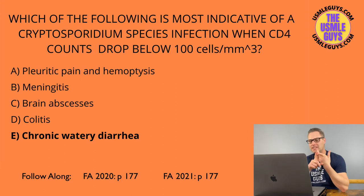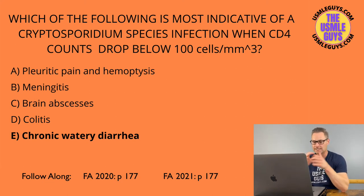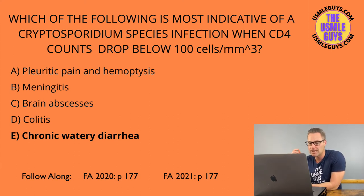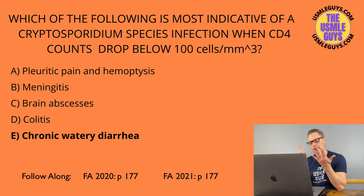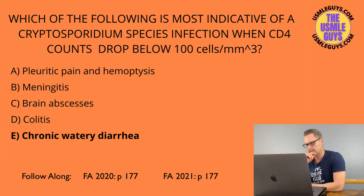EBV can present with B-cell lymphomas like CNS lymphoma or NHL. If there is a CNS lymphoma, always look for ring-enhancing lesions on imaging. Toxoplasma gondii causes brain abscesses visualized on MRI, showing multiple ring-enhancing lesions. Finally, Mycobacterium avium complex presents with nonspecific symptoms like fever, weight loss, and night sweats, as well as focal lymphadenitis. MAC is most likely when the CD4 count drops below 50.